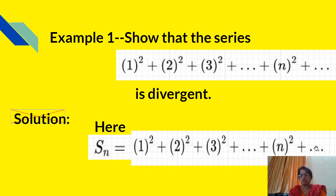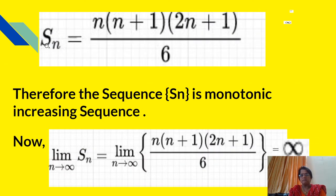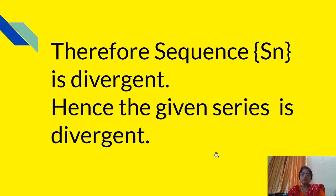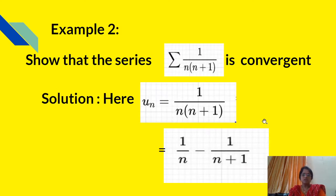This Sn can be written in the form n(n+1)(2n+1)/6. Therefore the sequence Sn is a monotonic increasing sequence. Taking the limit on both sides: limit as n tends to infinity of Sn equals limit as n tends to infinity of n(n+1)(2n+1)/6, which equals infinity. Therefore the sequence Sn is divergent, and hence the given series is divergent.